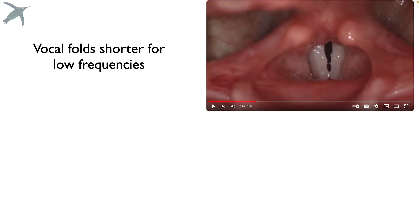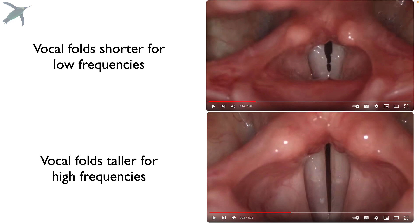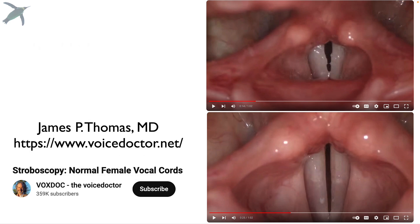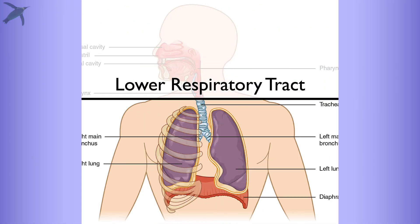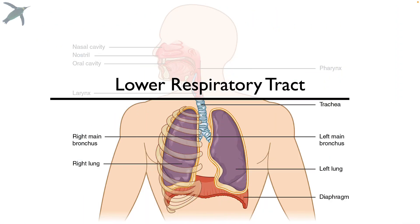Vocal folds will be shorter to produce low pitches, and muscles will stretch them for higher pitches. If you want to see vocal cords in action, please check out the linked video. Inferior to the larynx, we have the lower respiratory tract.